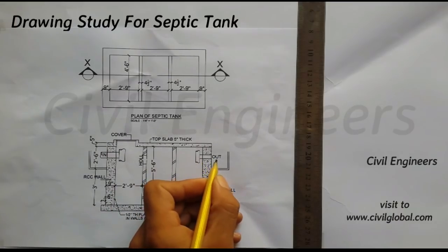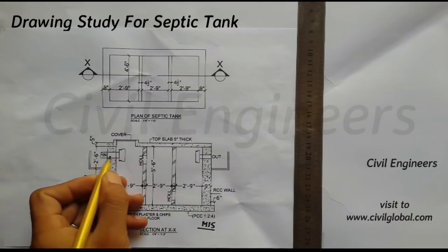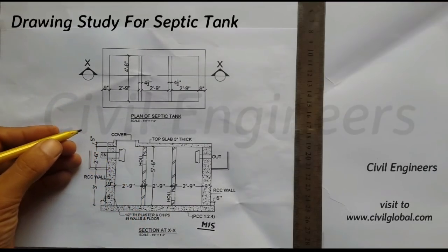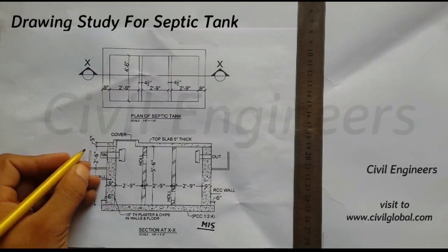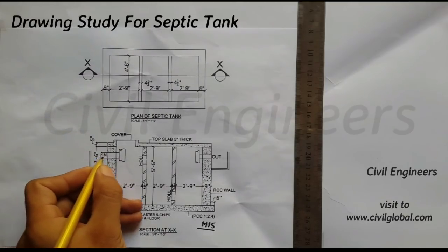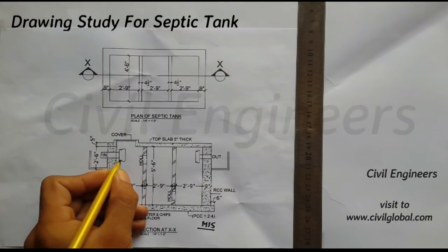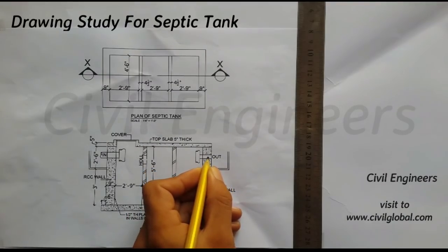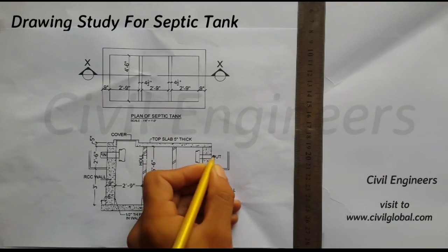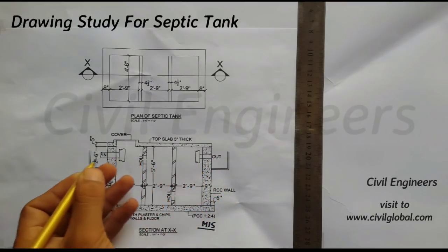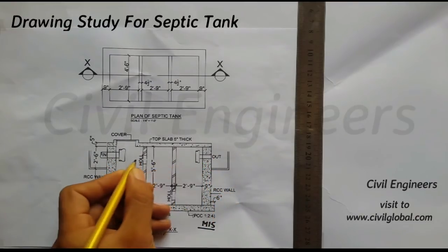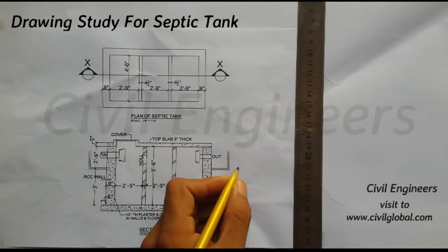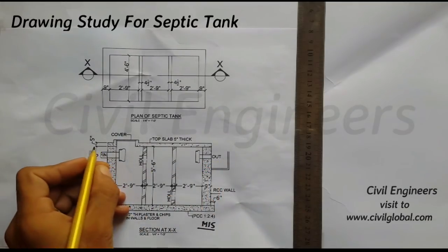This is the inlet and this is the outlet. From the WC — water closet — all the materials come here and become the inlet. On the outside we put the outlet pipe — the pipeline — so when it becomes full, some materials can flow from the outer side.